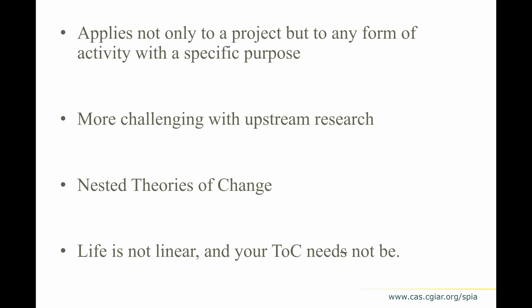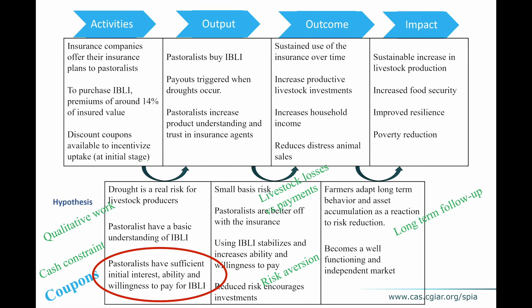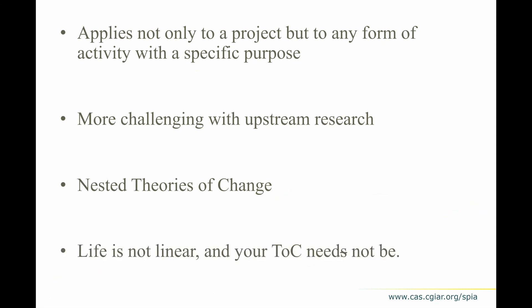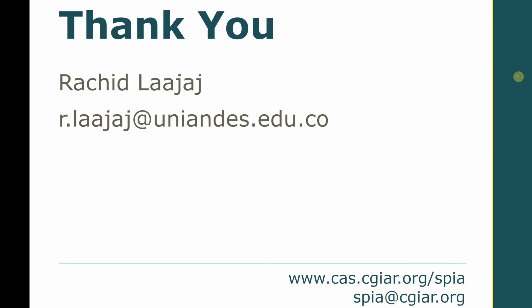A final comment: life is not linear, and your theory of change need not be either. It doesn't have to be a simple line. In some cases you have loops — for instance, pastoralists buying the insurance, then learning, then experiencing payouts, and that cycle repeating over many years before moving on to longer-term outcomes and impacts. You could have multiple branches and a more complex theory of change than a simple table. But this was a simple pedagogical example that can be adapted to every project and its needs. Thank you for your attention. I hope this was useful for thinking about theory of change and how to apply it for impact assessment.